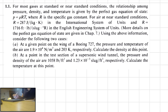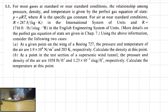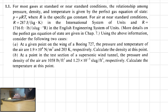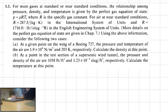Exercise 1.1. For most gases at standard or near standard conditions, the relationship among pressure, density, and temperature is given by the perfect gas equation of state. Pressure is equal to density multiplied by R, where R is the specific gas constant, multiplied by the temperature, always in Kelvin. For air at near standard conditions, R equals 287 joules per kilogram Kelvin in SI units, and R equals 1716 feet·pounds per slug·Rankine in the English Engineering System. More details are given in Chapter 7.